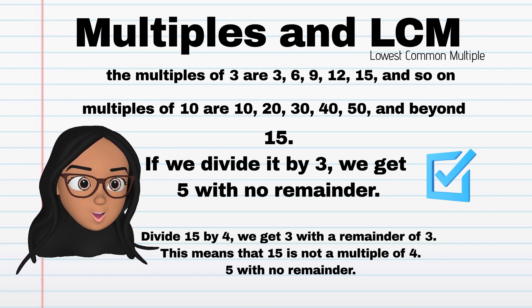On the other hand, if we divide 15 by 4, we get 3 with a remainder of 3. This means that 15 is not a multiple of 4.